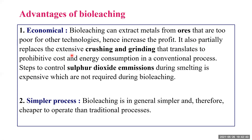Bio leaching also partially replaces the extensive crushing and grinding that translates to prohibitive cost and energy consumption in a conventional process. Conventional processes require too much energy for crushing, grinding, heating, and melting. Additionally, steps to control sulfur dioxide emission during smelting are expensive, which are not required during bio leaching. Bio leaching in general is a very simple process and therefore cheaper to operate than the traditional process, requiring no skilled operators.